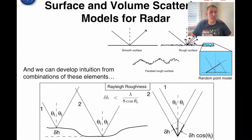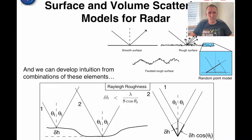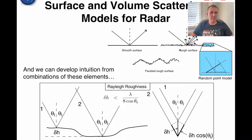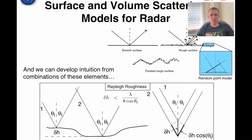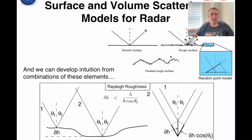Hi guys, Dr. J here. In this video we're going to talk about in more detail surface and volume scattering models for radar and general radar backscattering issues. We've talked about this already somewhat briefly. We have two kinds of models here: a smooth surface and a rough surface. Rough surfaces are radar bright because they reflect light in all different directions. You can have different levels of roughness — a faceted rough surface — rough at different wavelengths. A surface which is smooth at certain wavelengths, say roughly flat at a meter length scale and larger, will be seen as smooth or rough depending on your radar wavelength. We can conceptualize radar backscattering as collections of these different types of scatterers, thinking about roughness at different points and how they all add together.